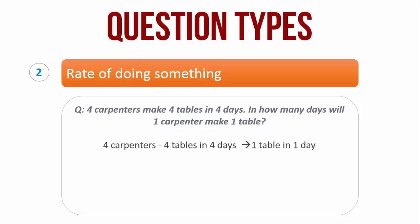The question tells us, 4 tables are made by 4 carpenters in 4 days. Therefore, 4 carpenters can make 1 table in 1 day. Since the ratio of work done will be proportional, 4 carpenters can do 1 table in a day.